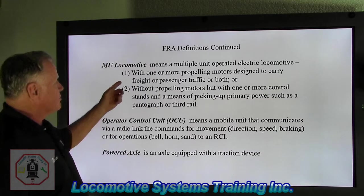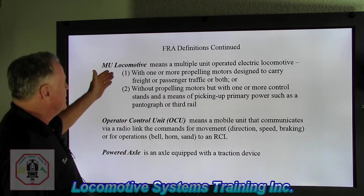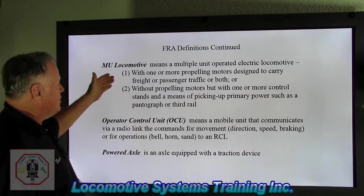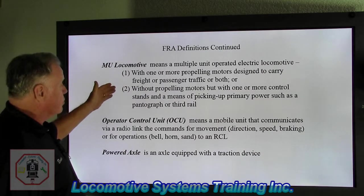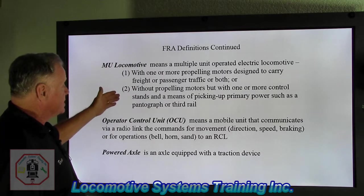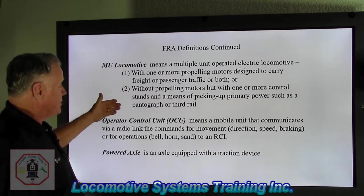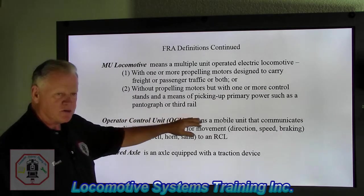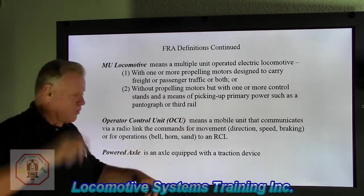MU locomotive means a multiple unit operated electric locomotive: number one, with one or more propelling motors designed to carry freight or passenger traffic, or both; or without propelling motors, but with one or more control stands, and a means of picking up primary power, such as a pantograph or third rail. That may be like an inner city commuter train where they have the wires overhead.